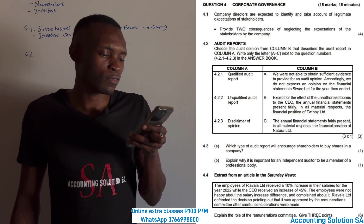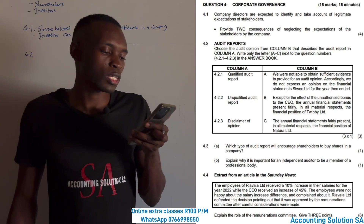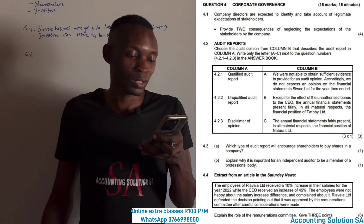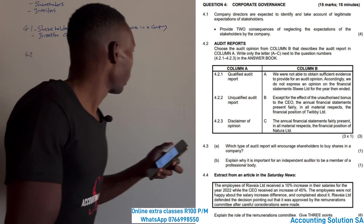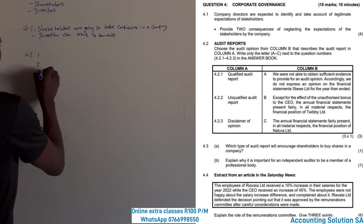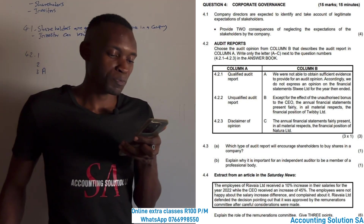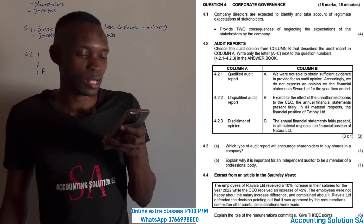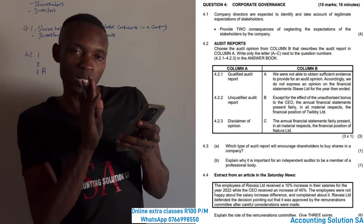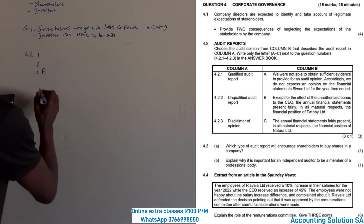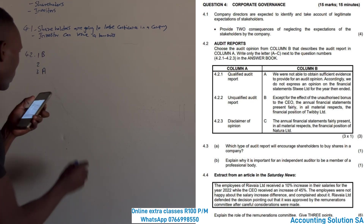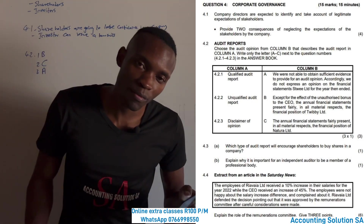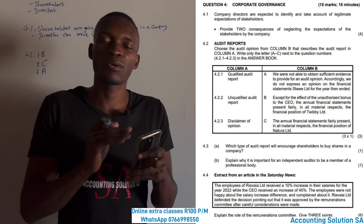Now let's match them. Number A: 'We are not able to obtain sufficient evidence to provide an audit opinion; accordingly we do not express an opinion on the financial statements of Sweet Ltd for the year ended.' This is clearly a disclaimer of opinion. Number B: 'Except for the effect of the unauthorized bonus to the CEO, the annual financial statements are presented fairly in all material respects' — only one issue, so this is qualified. Number C: the annual financial statements are fairly presented in all material respects — this is unqualified.